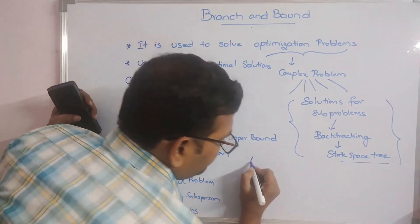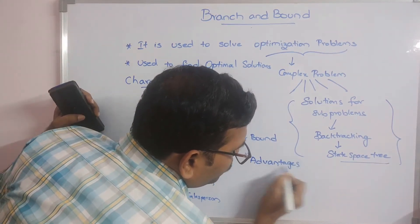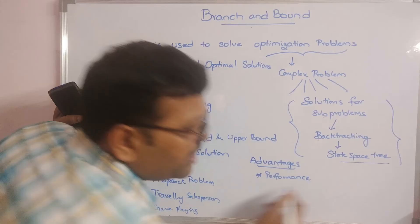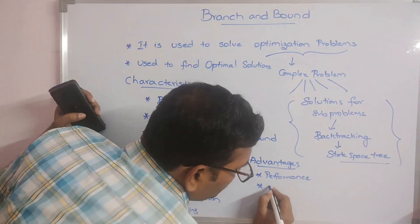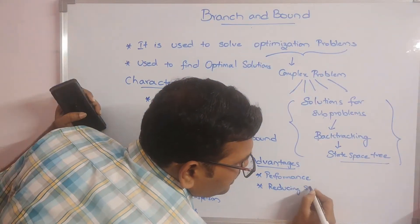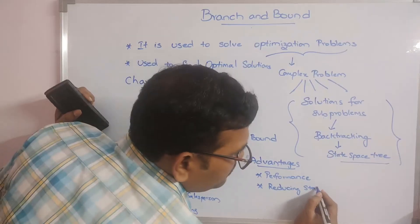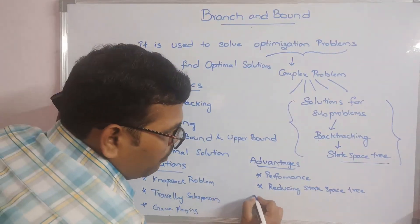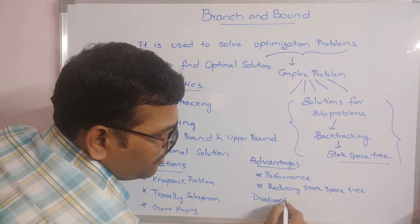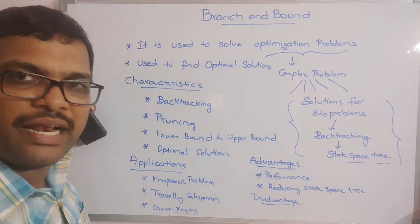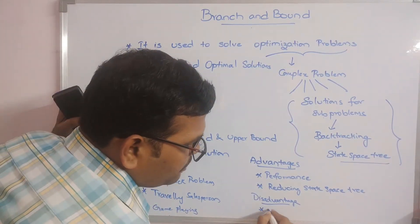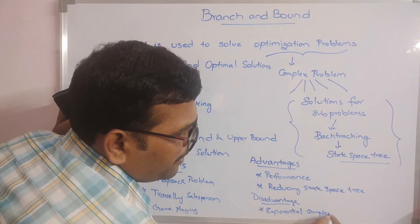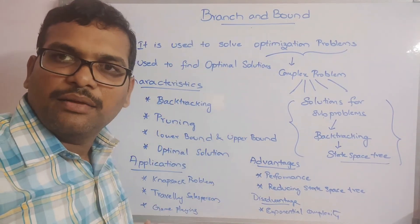What are the advantages of using Branch and Bound? First is performance, because it leads to the optimal solution. Second is reducing the search tree — it is not required to create the complete state space tree. The only disadvantage is complexity — Branch and Bound has exponential time complexity, which is the main drawback.